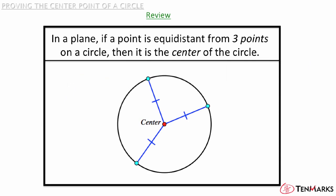Nice work! In review: in a plane, if a point is equidistant from three points on a circle, then it is the center of the circle. To prove a point is the center of a circle, find the distance from that point to all three points on the circle, and if the lengths are the same, then that point is the center of the circle. Good luck!